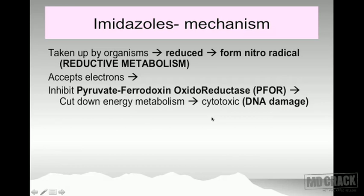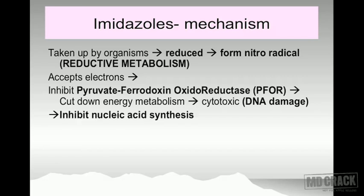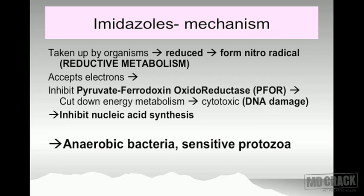After inhibiting PFOR, there is a cutting down of the energy metabolism of the organism, leading to a cytotoxic effect or DNA damage. The drug goes inside the microorganism, uses its enzymes to get converted into the nitro radical through reductive metabolism. This active form inhibits PFOR, damages nucleic acid synthesis, and causes DNA damage — which is why imidazoles are bactericidal agents, active against anaerobic bacteria and sensitive protozoa.